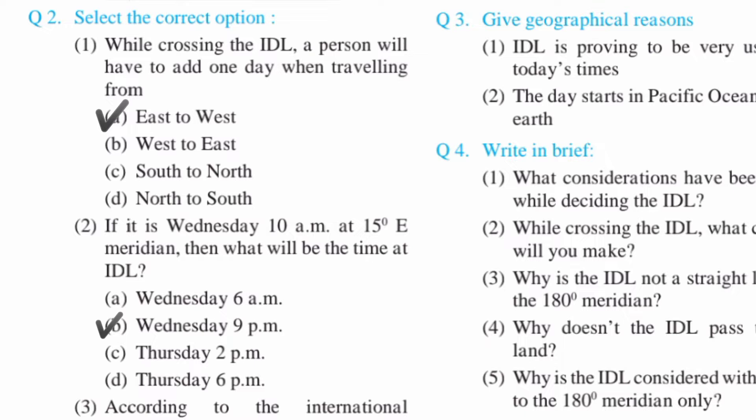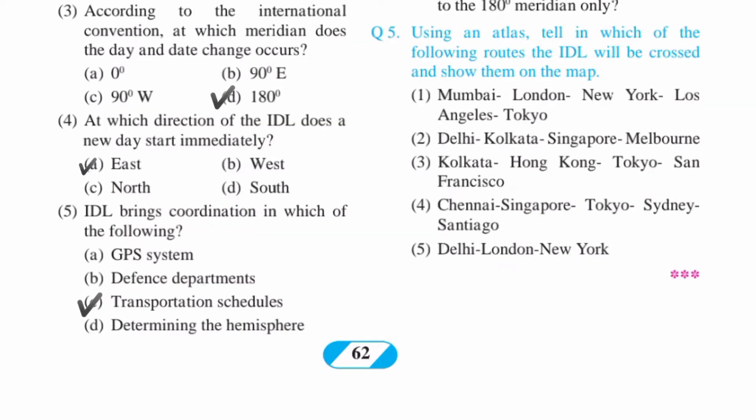Second: if it is Wednesday 10 a.m. at 15 degree East Meridian, then what will be the time at the dateline? Answer is B: Wednesday 9 p.m. Third: according to the international convention, at which meridian does the day and date change occur? Answer is 180 degree, option D.